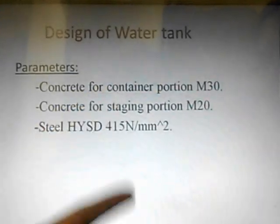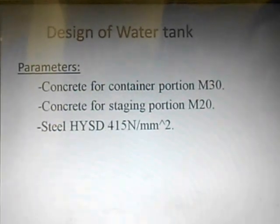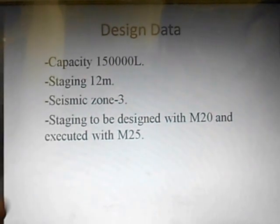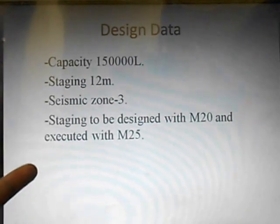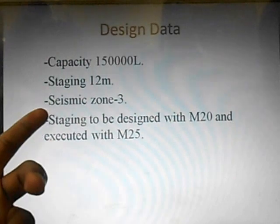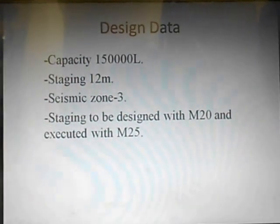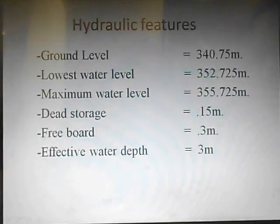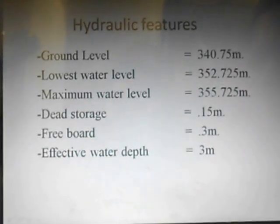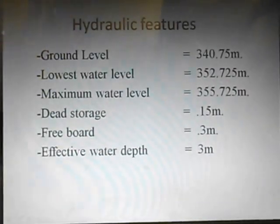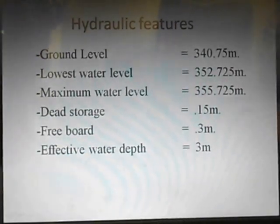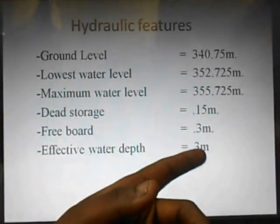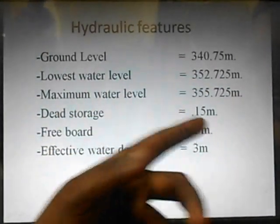Coming to design of water tank, these are the parameters we will use. The design data: our tank has a capacity of 1.5 lakh kilolitres, staging part is 12 meters, and it is in seismic zone 3. These are the hydraulic features — the tank overall depth is 3.45 meters, water depth is 3 meters, freeboard is 0.3 meters, and dead storage is 0.15 meters.